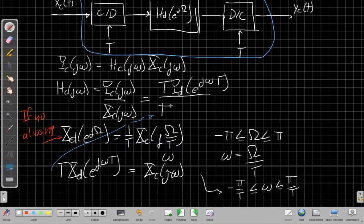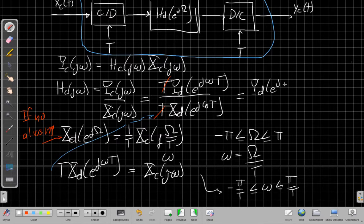So I plug this into the denominator. I get T times Xd of e^(jΩT). I can then cancel out the T's and we can show the effective continuous time filter...